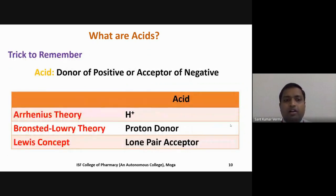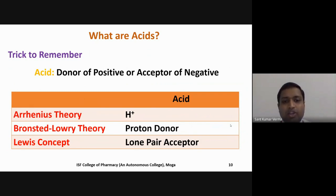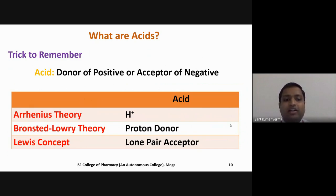The general trick to remember what constitutes an acid: a donor of positive species, or a species which can lose a positive, or an acceptor of negative will be an acid. In Arrhenius theory, H⁺ is the positive species, so any species that generates H⁺ in aqueous media is an acid. In Brønsted-Lowry theory, a proton is positive, so a proton donor is an acid. In Lewis theory, the acceptor of a lone pair (which is negative) is an acid.